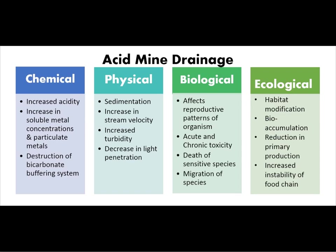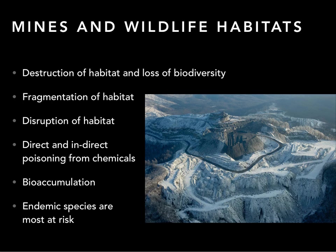Acid mine drainage also has physical effects such as added sediment in the rivers, and because of that, a decrease in light penetration. It has biological effects such as a difference in the reproductive patterns of organisms and the poisoning of animals, both slow and fast. It has ecological effects on ecosystems such as habitat modification and bioaccumulation, which means that the predators who eat prey with poison are the most affected. These mines affect wildlife and their habitats — they destroy habitats and therefore cause loss of biodiversity. They fragment habitat and disrupt habitat. Therefore, endemic species are most at risk, because if this happens to their own habitat, they will probably become extinct.